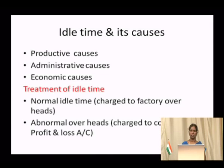Administrative causes arise due to under-utilisation of the plant capacity. If the plant has 100 percent capacity but the organisation is utilising only 75 percent, the remaining 25 percent of workers remain idle and the organisation still has to pay them unnecessarily. This is an administrative issue. If the management decides for fuller utilisation of plant capacity, losses due to idle time can be avoided.